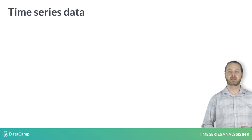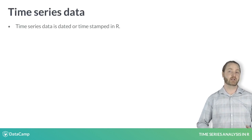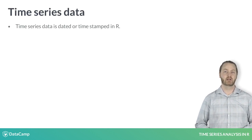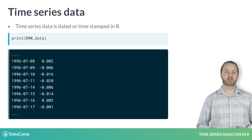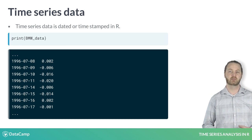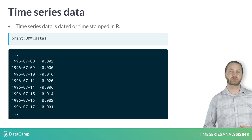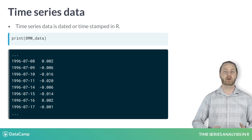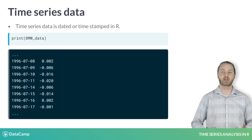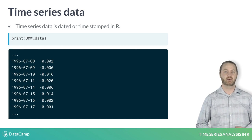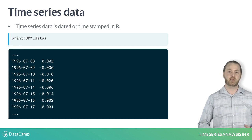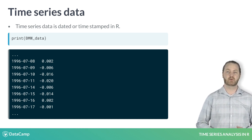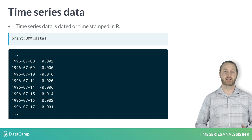Time series data is dated or time stamped. The print function will display time series data along with this date information. It may be organized as a long list, as we have for the BMW stock data, or as a table, as we have for the CPI data.